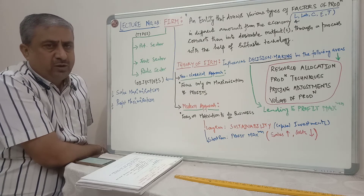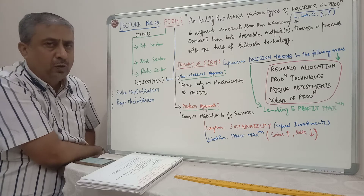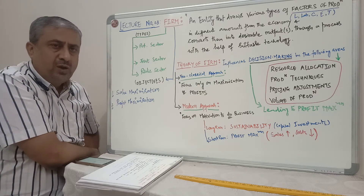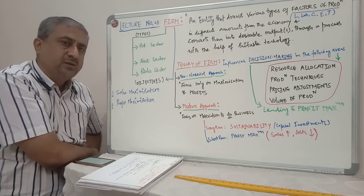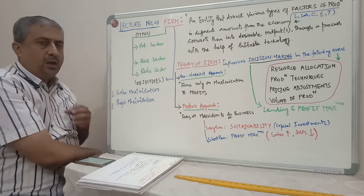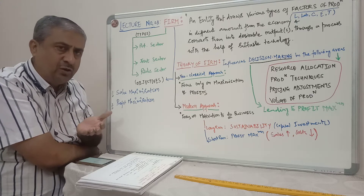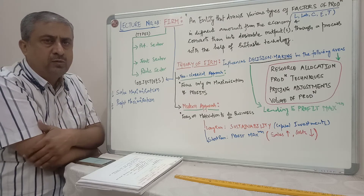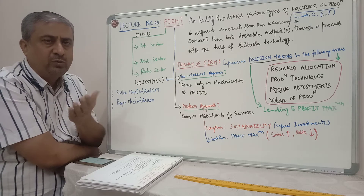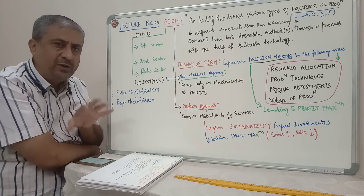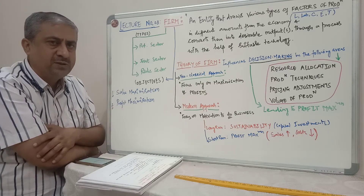What does the theory of firm do? The theory of firm influences decision-making in the following areas. Every entity can achieve sales maximization or profit maximization only if it takes decisions in resource allocation — how much resource is to be allocated, when, and from where. The timing of resource allocation also plays an important role in achieving the firm's objectives of sales or profit maximization.